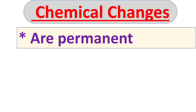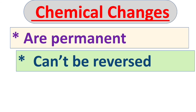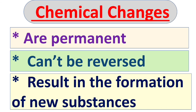Chemical changes are permanent changes. We cannot obtain the original or old substance, and this change cannot be reversed. When a chemical change takes place, the end result is not the old substance but a new substance. That was all about physical and chemical changes of different states of matter. If you liked this video, please like, share, and subscribe to my channel.